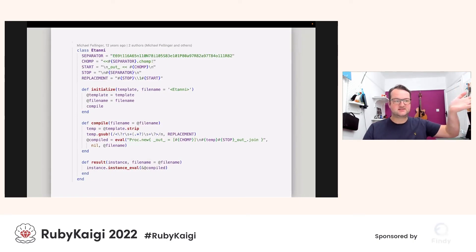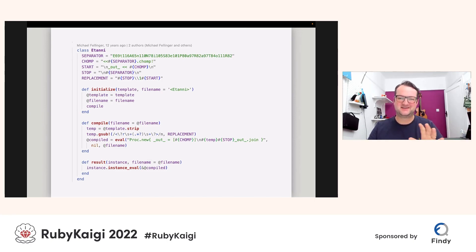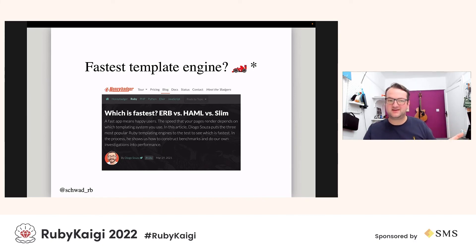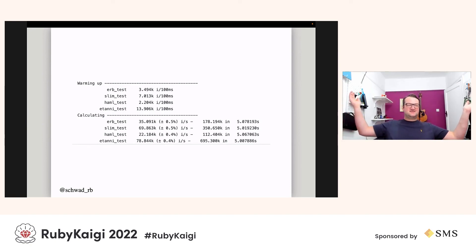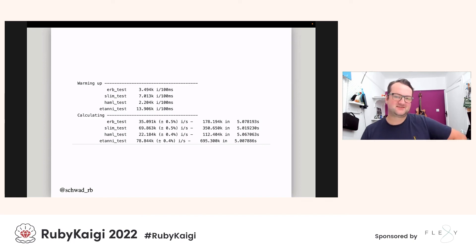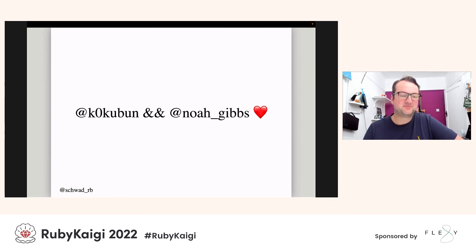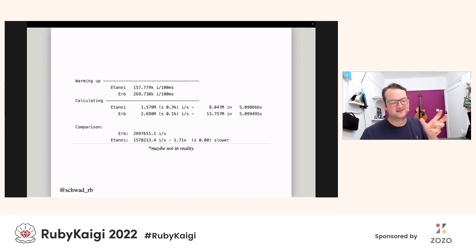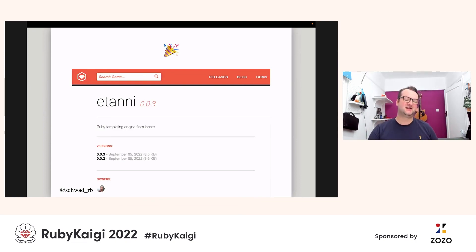Etanni alleged it was fast, so I tested it. I used a 2011 Honey Badger blog ERB/Haml/Slim benchmark, threw Etanni in on the same benchmark, and 14 years later it is the fastest — twice as fast as ERB, faster than Slim, faster than Haml. Big credit to Koichi Sasada, maintainer of ERB and Haml, and Noah Gibbs who helped me with the benchmark to show that ERB is actually faster if you do things appropriately. But I still think you might want to play with Etanni — so I've gemified it for you: gem install etanni today and now you have access to it.